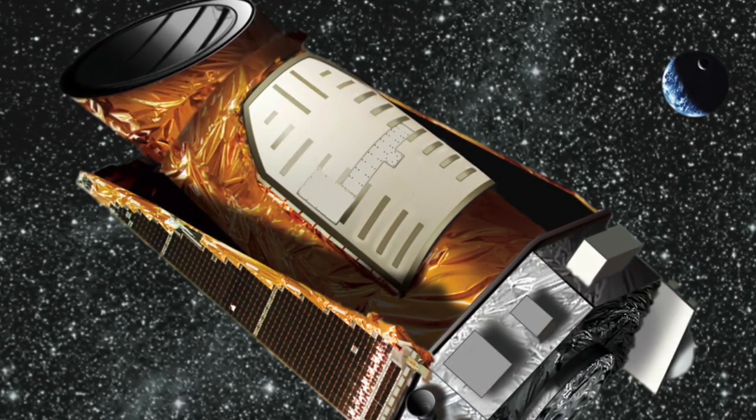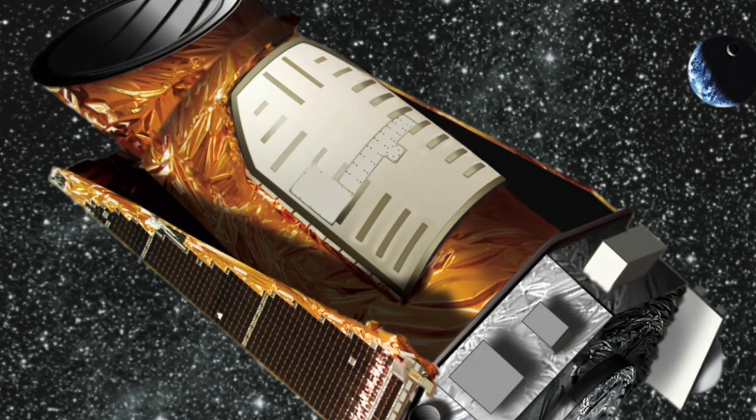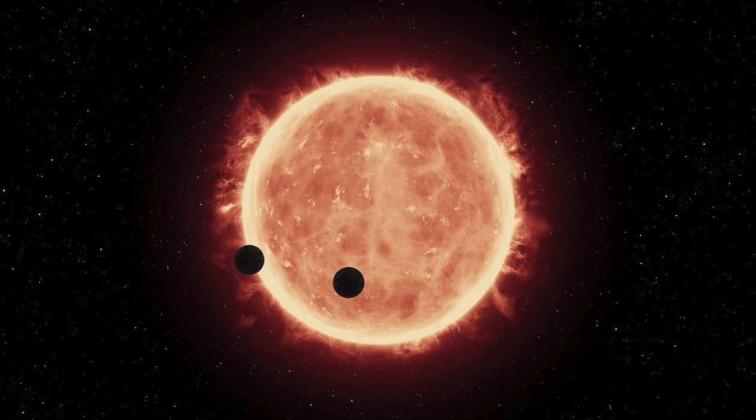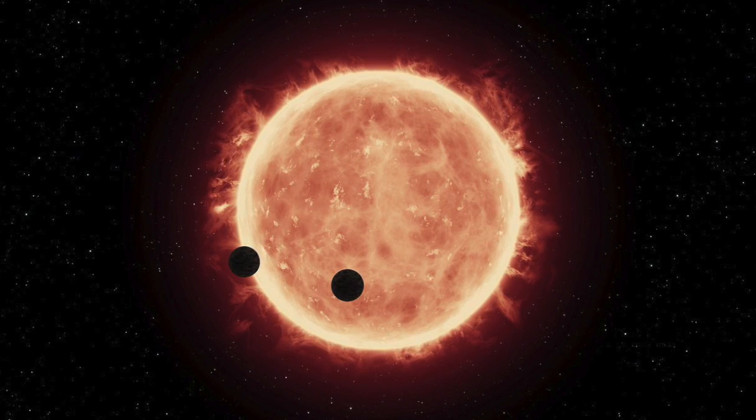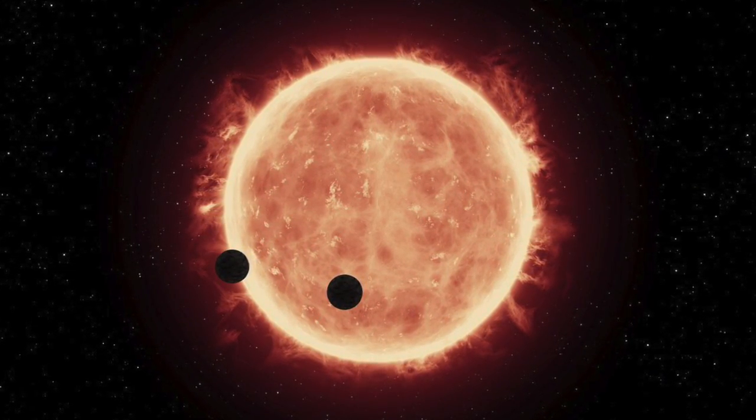This allowed scientists to watch if dips in the light occurred when objects passed between Kepler and the parent stars, such as exoplanets, but also exocomets or dust clouds or whatever might pass by. Through this method, Kepler found over 2000 exoplanets.